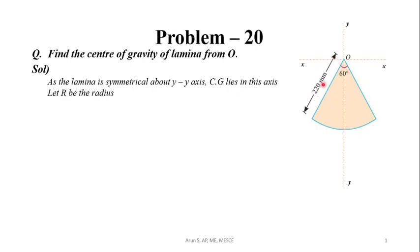Now let R be the radius of this lamina. And semi vertical angle, that is half angle, that is 60 by 2, that will be 30 degrees. In terms of radians it will be π/6 radians.